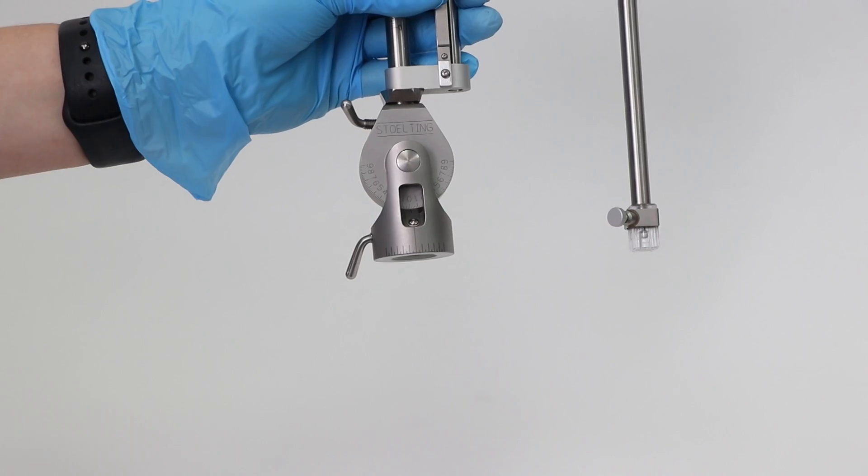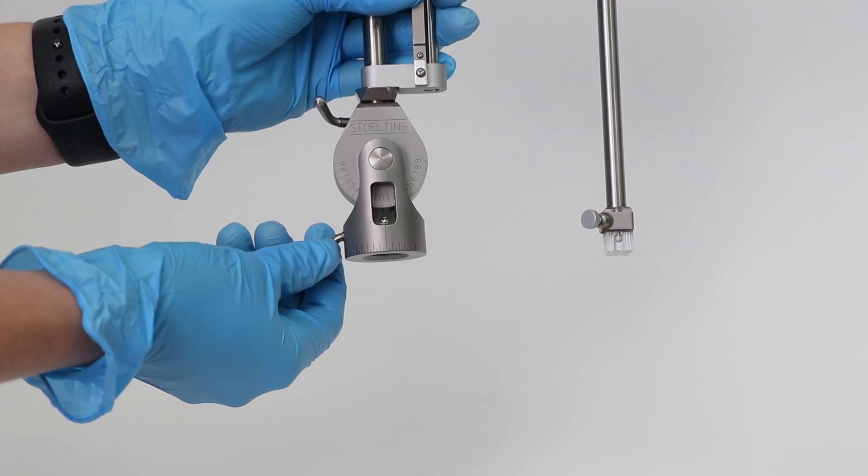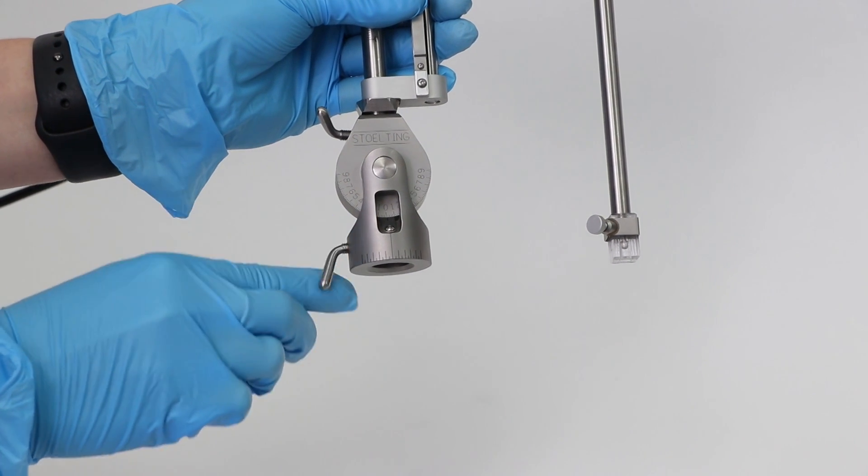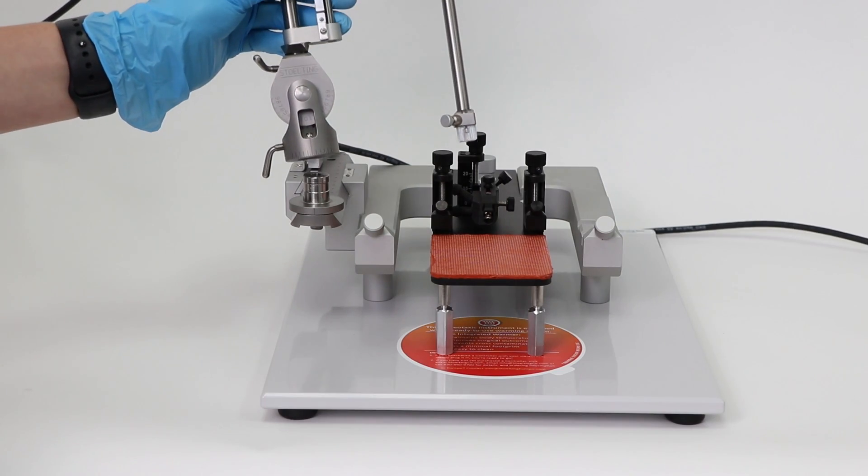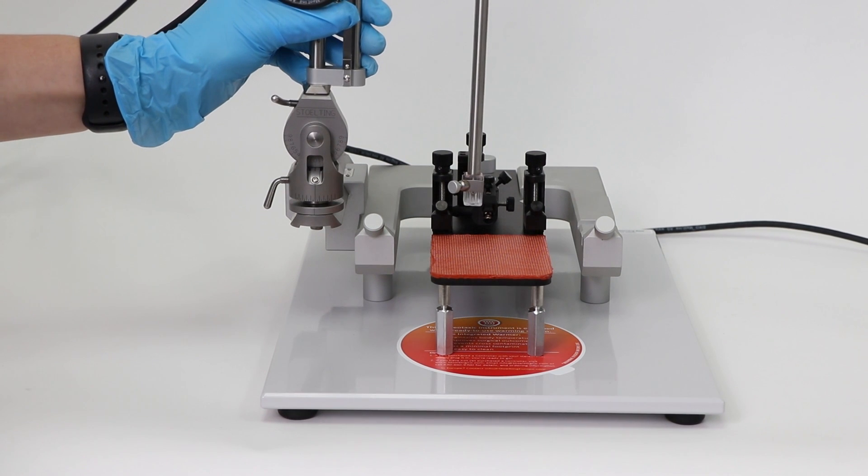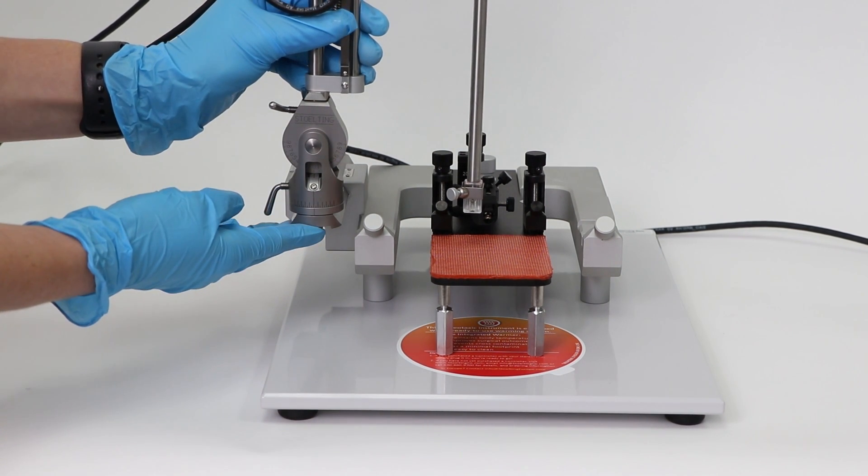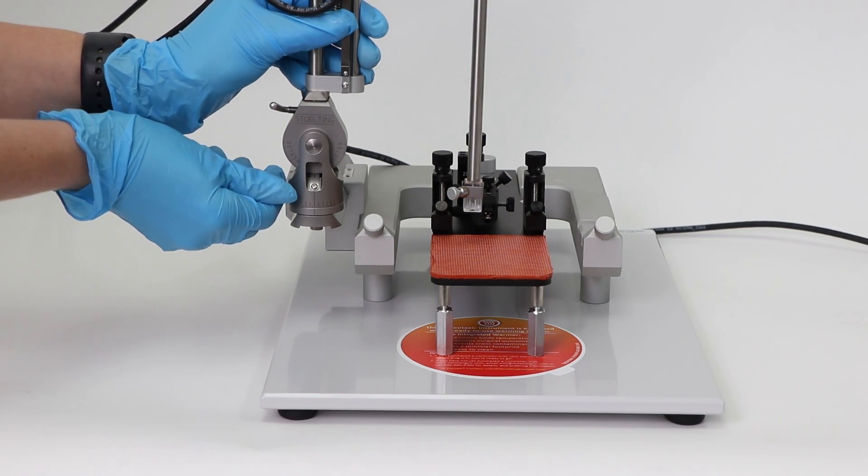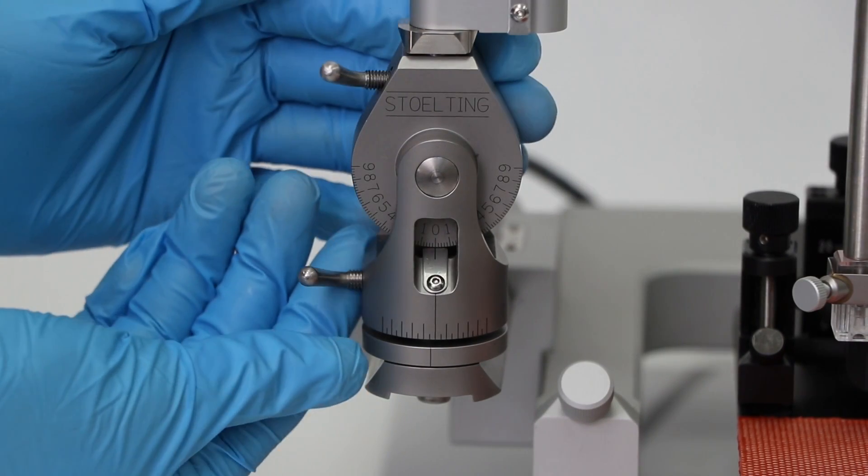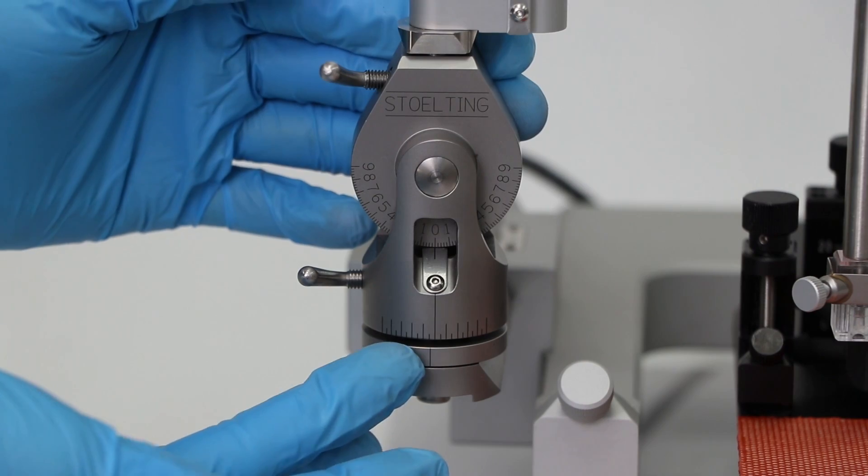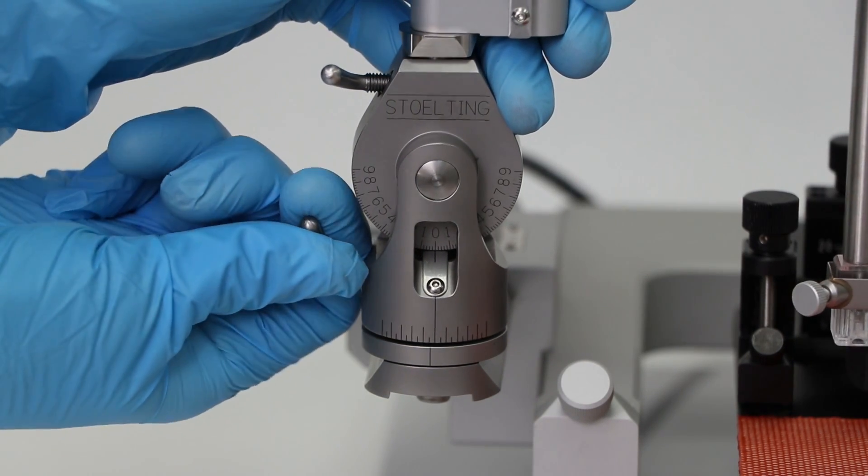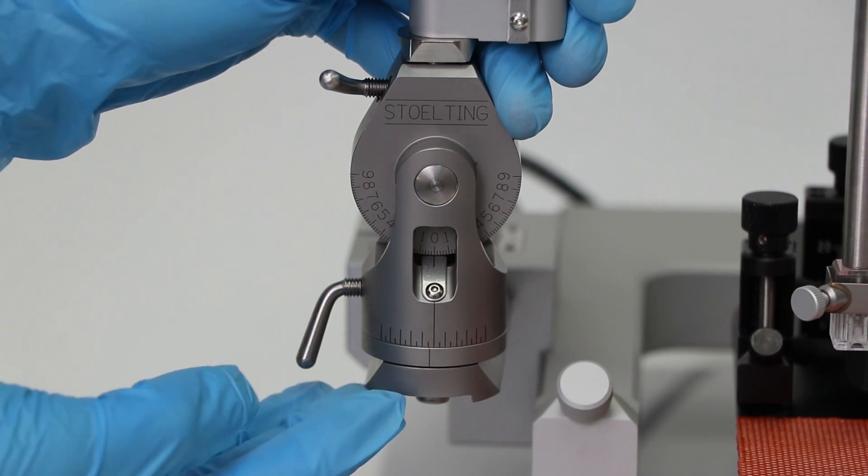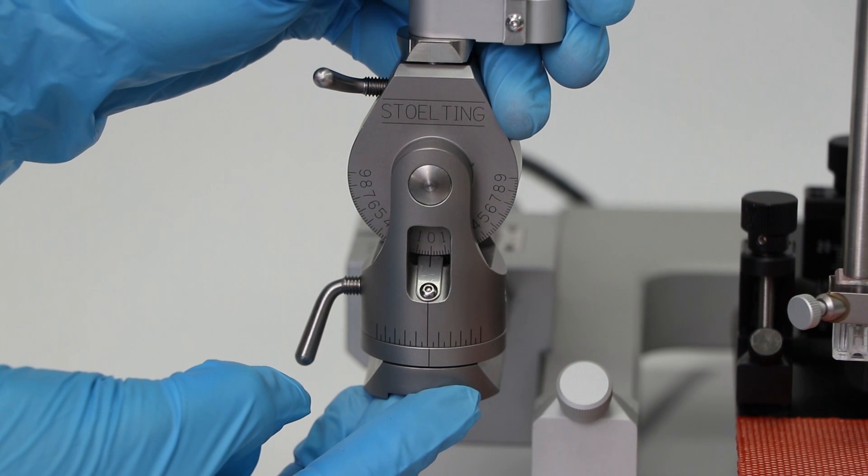Next, take your manipulator and make sure the fastening screw closest to the base is loose. Place it on the anterior posterior knob fitting. Make sure the manipulator is fully seated and secure with the vertical screw once aligned according to the scale on the base of the manipulator.